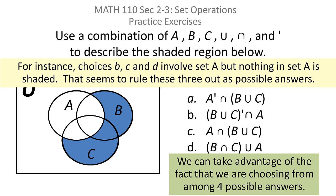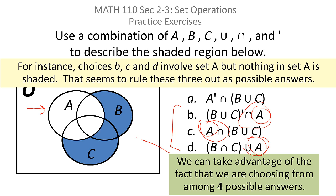Choices B, C, and D all involve set A. But if you look at the shaded part of the diagram, there's nothing in A shaded at all. If the answer were choice B, C, or D, there would be something from A shaded. But there's not. So I can knock out B, C, and D without doing much work at all — the answer has to be A.